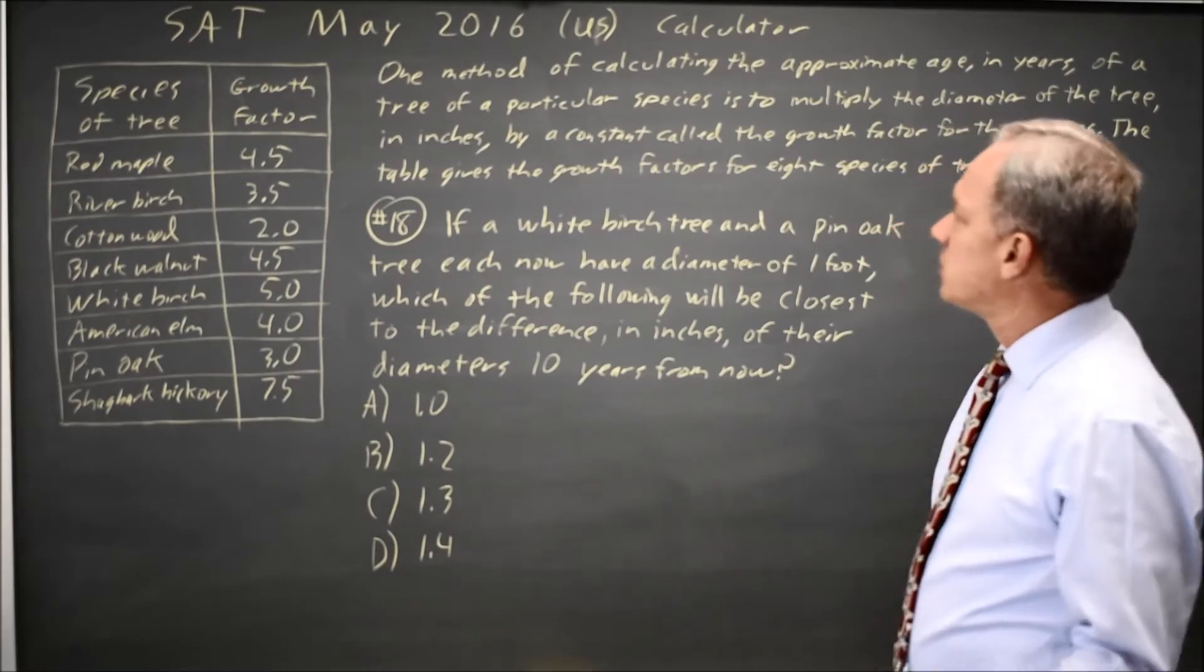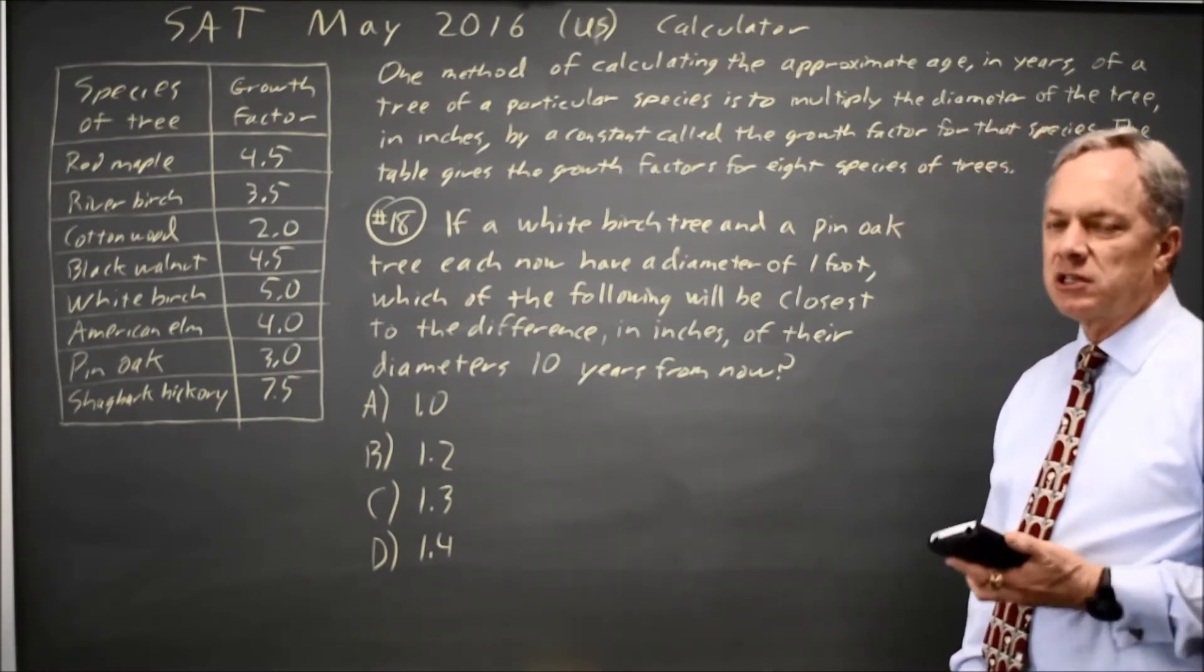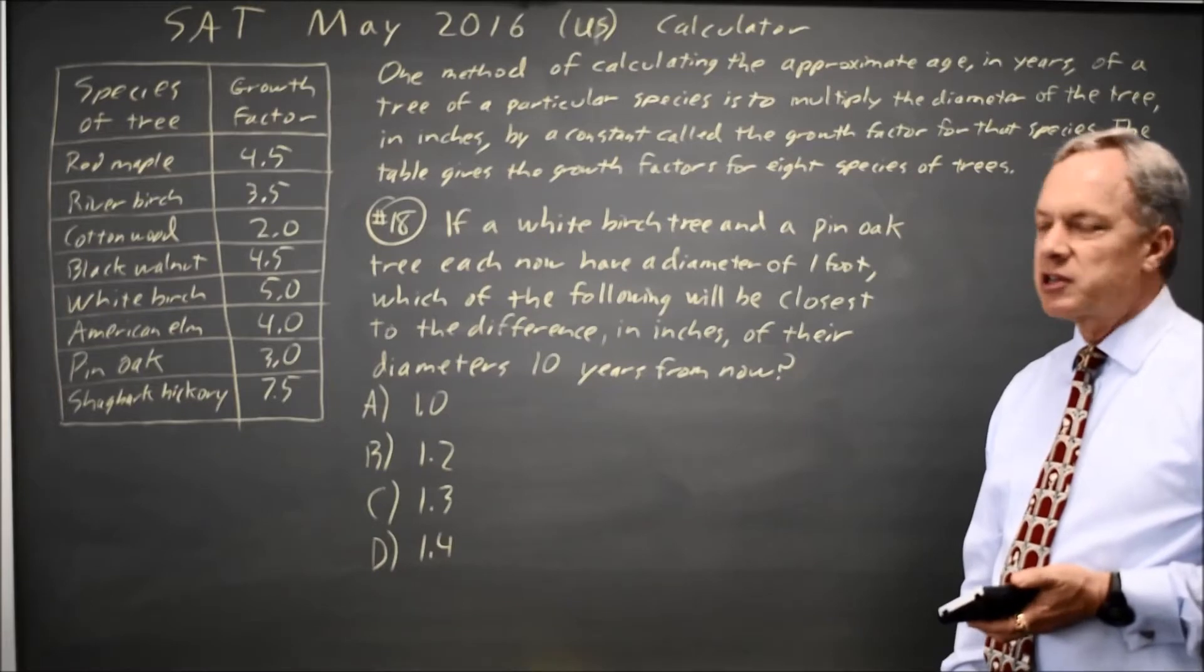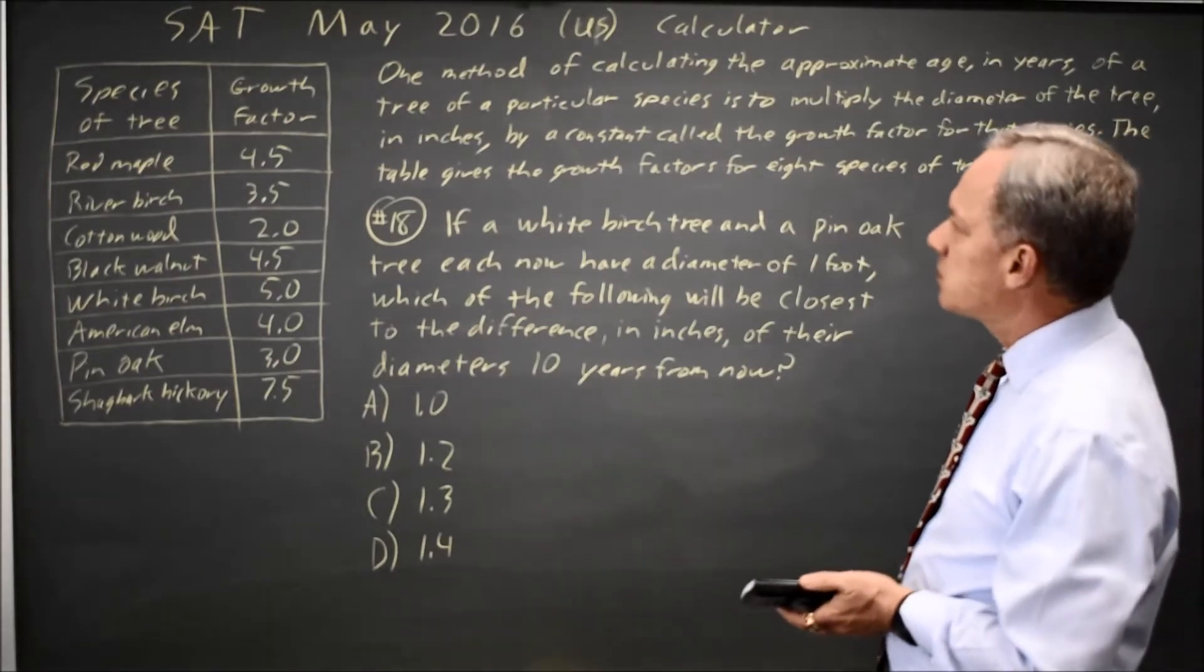And there's a few ways to do this. First we can figure out the current age, add 10 years, and then figure out the diameter at that point. So let's use that approach.